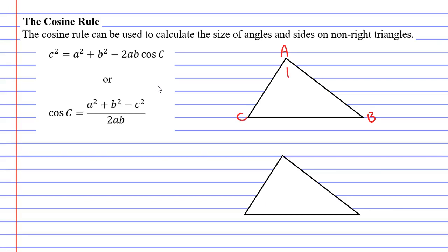Opposite these capital letters are lowercase letters. Opposite capital A is lowercase a, opposite capital B is lowercase b, and opposite capital C is lowercase c.